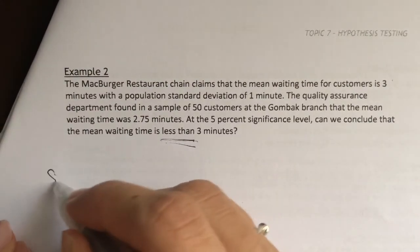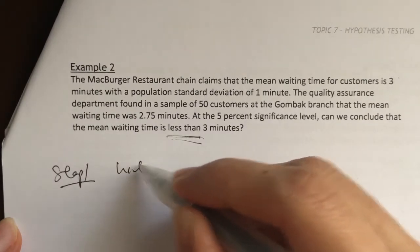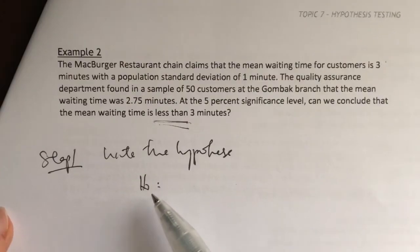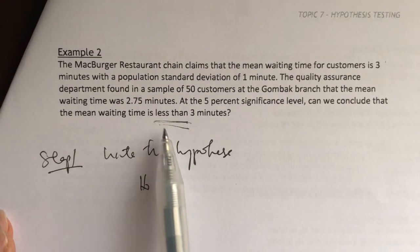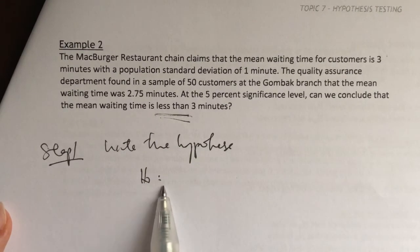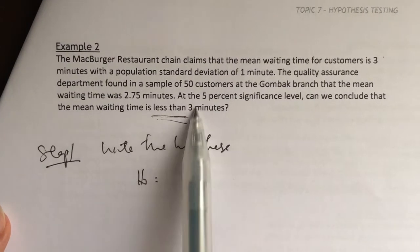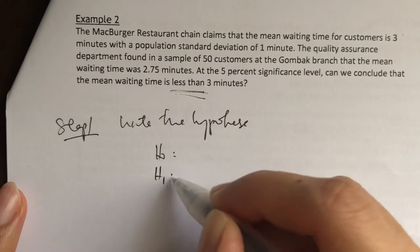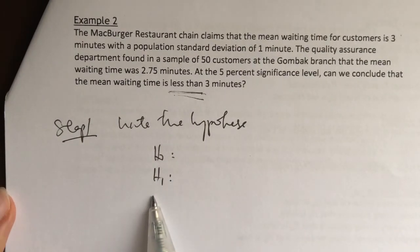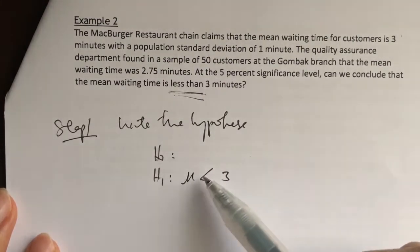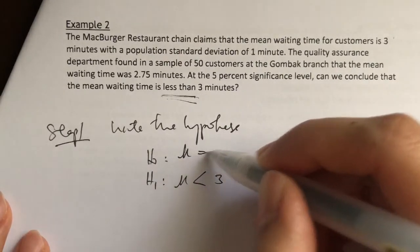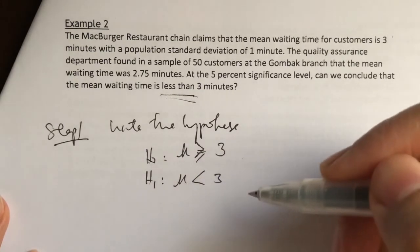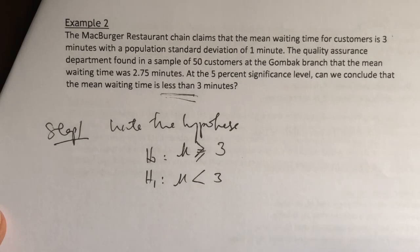Step 1: write down the hypothesis. Always write the null hypothesis first. The null is always equals — either equals to, greater than or equals to, or less than or equals to. Here, 'less than 3' tells us the alternate hypothesis. So the alternate hypothesis is mu less than 3 minutes. Therefore, the null hypothesis is mu greater than or equals to 3. You can also write it as equals to 3 — both are acceptable, though the 'greater than or equals to' form may give a more accurate interpretation.